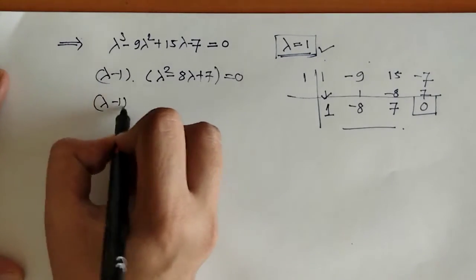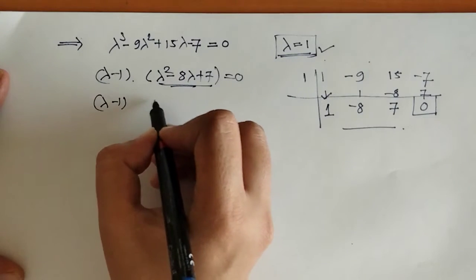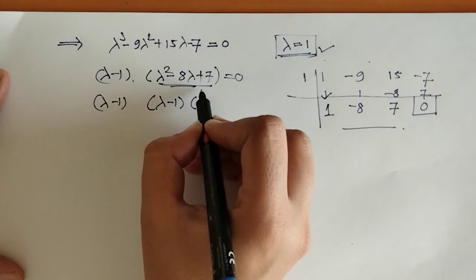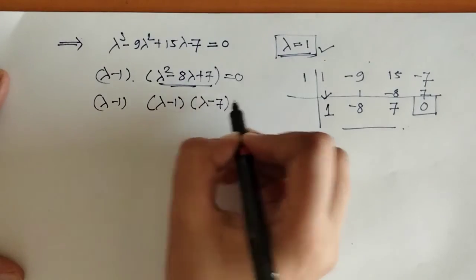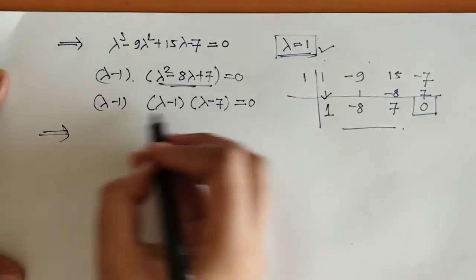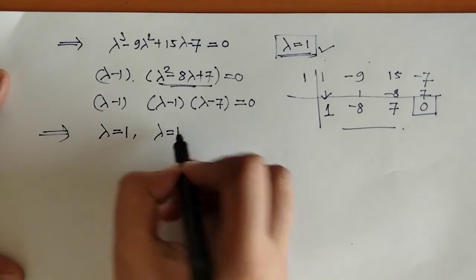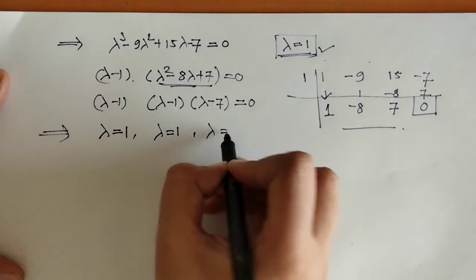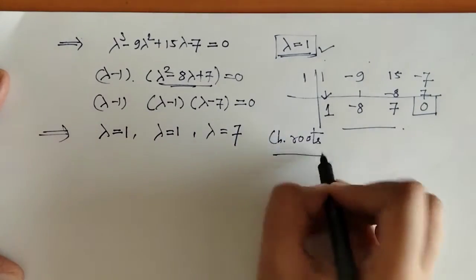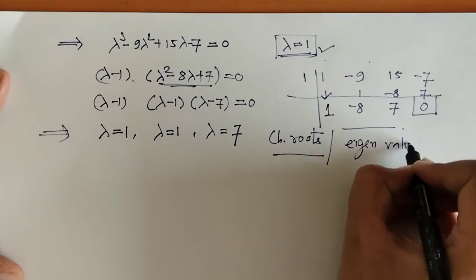We got the other factor by synthetic division, which gives us a quadratic equation. We can factorize this to get lambda minus 1 and lambda minus 7. By putting all factors equal to 0, we get lambda equals 1, again lambda equals 1, and lambda equals 7. These are the characteristic roots, which we call eigenvalues.